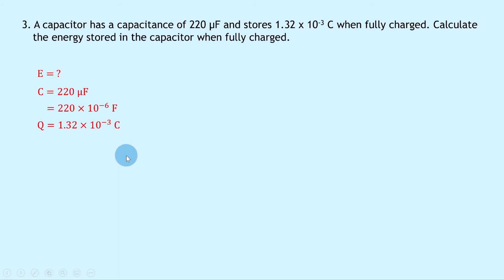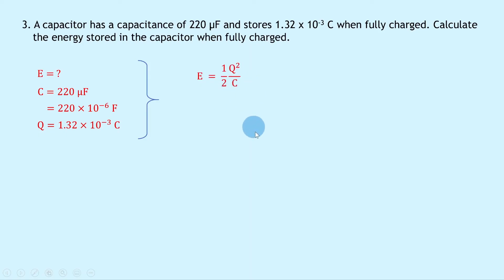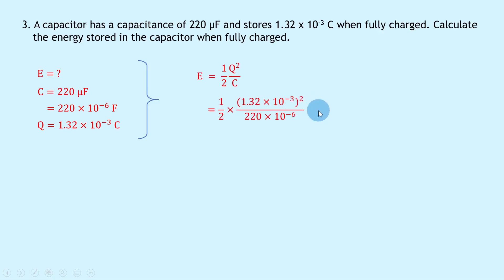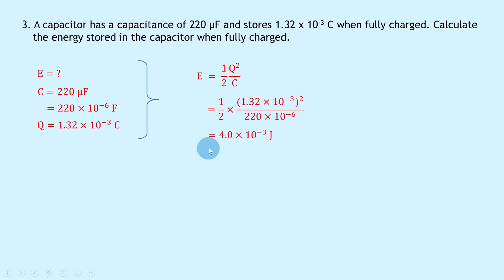Writing down our energy equation relating capacitance and charge, we have E equals a half Q squared over C. Substituting in the numbers gives a half times 1.32 times 10 to the minus 3 squared, divided by 220 times 10 to the minus 6. Putting that into your calculator gives a final answer of 4.0 times 10 to the minus 3 joules.